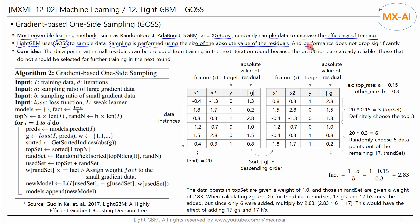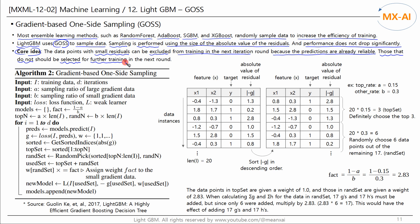Performance does not drop significantly. The core idea is as follows: data points with small residuals can be excluded from training in the next iteration round, because the predictions are already reliable. Those that are not reliable should be selected for further training in the next round.